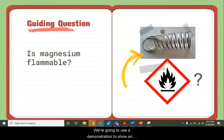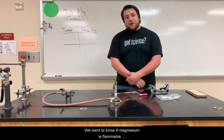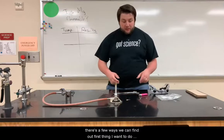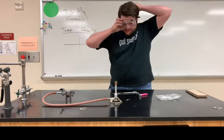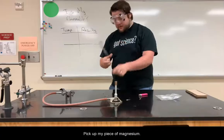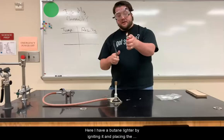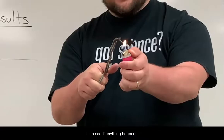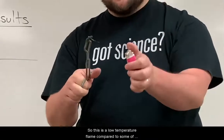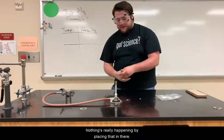We're going to use a demonstration to show an example of how to write a CER, using the question: is magnesium flammable? First, I'm going to put on my goggles, then pick up my piece of magnesium with tongs. Here I have a butane lighter — by igniting it and placing the magnesium into the flame, I can see if anything happens. This is a low-temperature flame, and nothing's really happening by placing the magnesium in there.